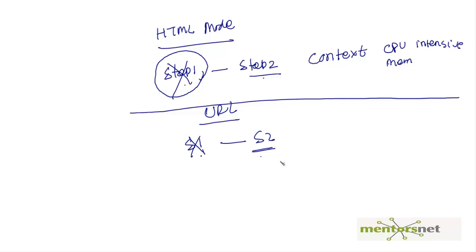This is the main difference between HTML mode and URL mode. It depends on the case — you start with HTML mode, and if things do not work, VUgen automatically switches back to URL mode. If you want a scalable script, consider URL mode but you must handle correlation and dynamic values yourself programmatically.